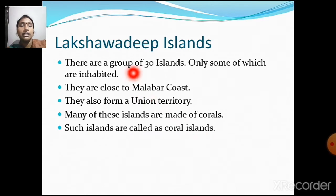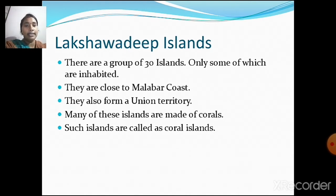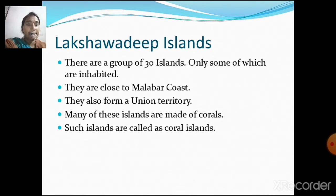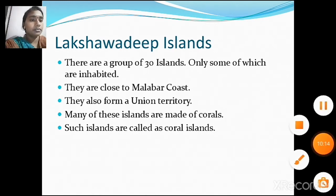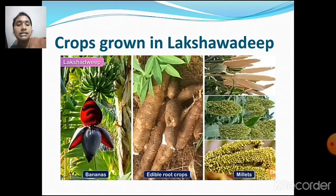So to recap: Lakshadweep Islands are a group of 30 islands, only some of which are inhabited. They are close to the Malabar coast and form a union territory. Many are made up of corals and are called coral islands. The major crops grown in Lakshadweep are bananas, edible roots, and millets.